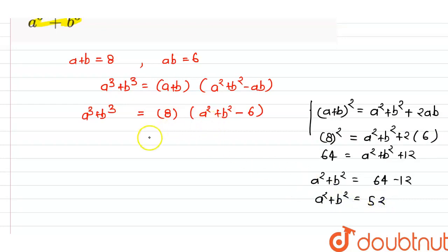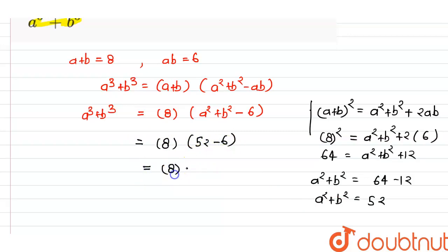We now apply this value. So a cubed plus b cubed equals 8 times (a squared plus b squared minus ab), which is 8 times (52 minus 6), that is 8 times 46, which equals 368. So 368 is the value of a cubed plus b cubed. This is our answer. Thank you.